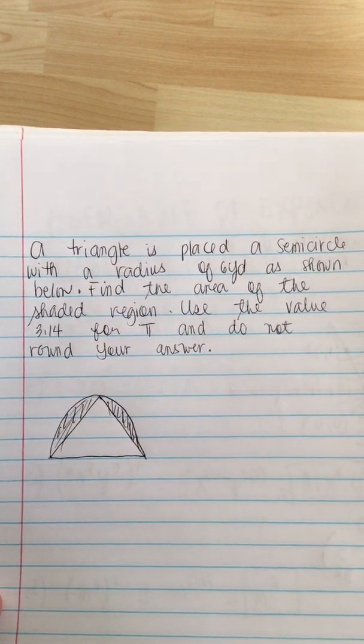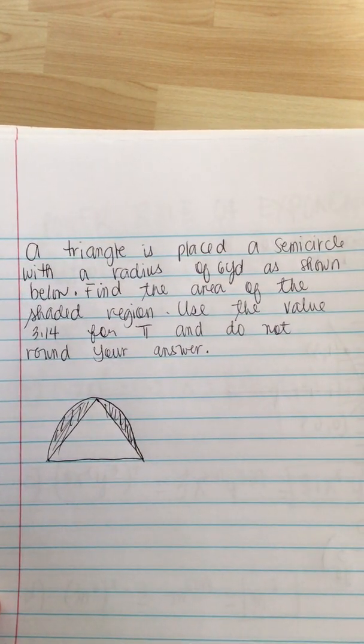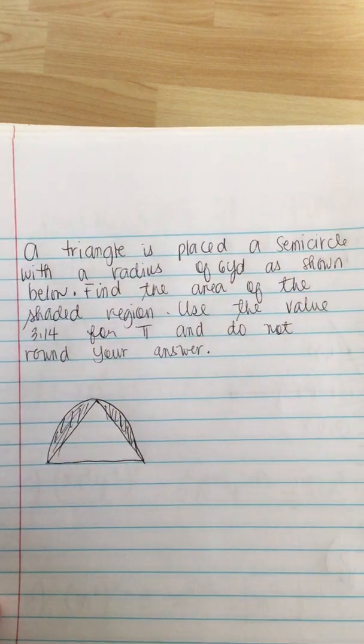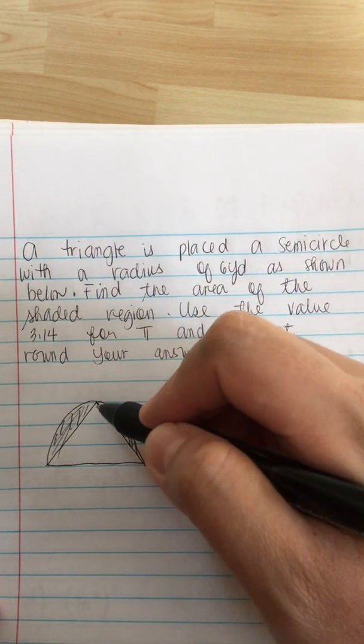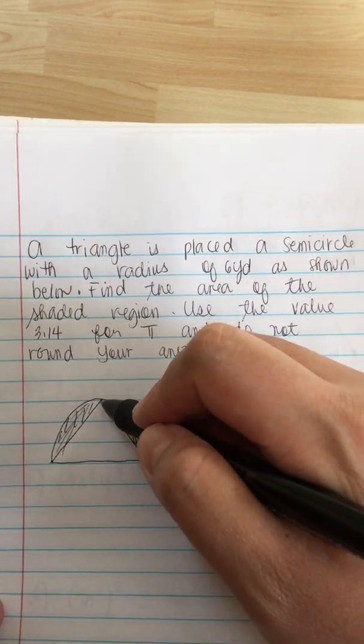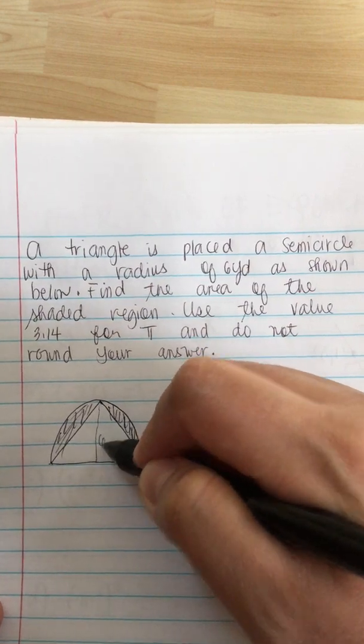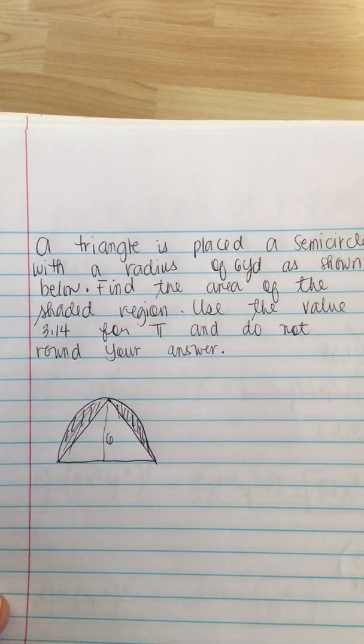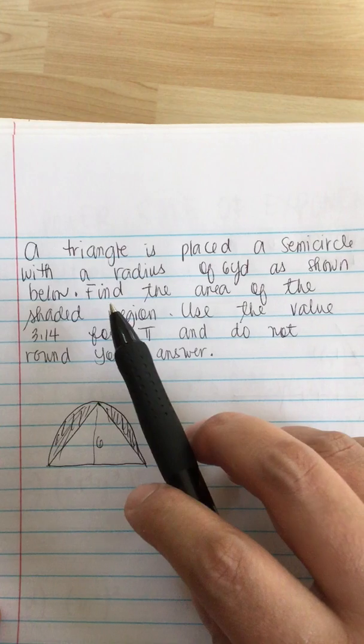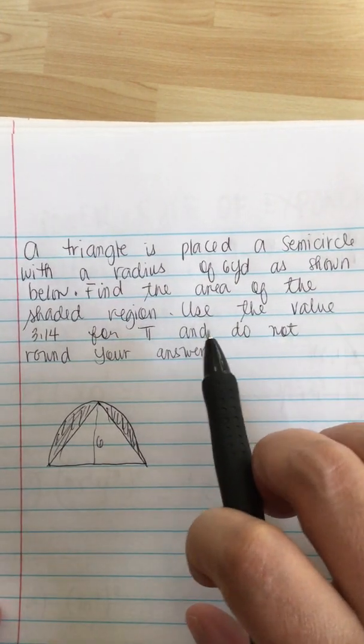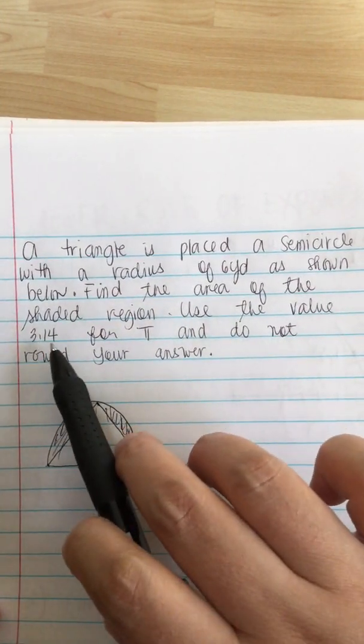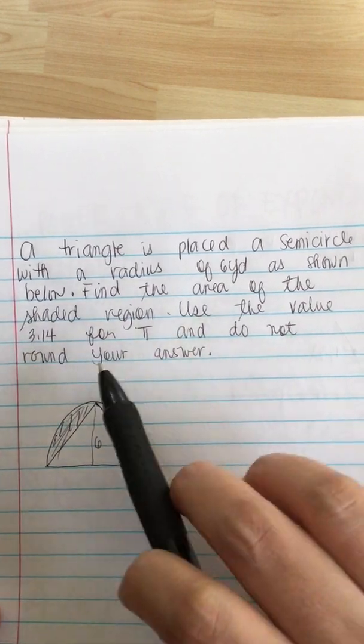A triangle is placed in a semicircle with a radius of 6 yards as shown below. Find the area of the shaded region. Use the value 3.14 for pi and do not round your answer.